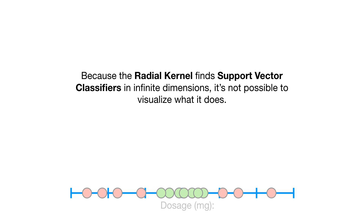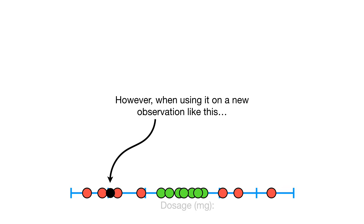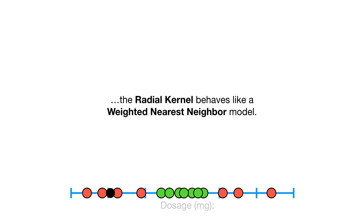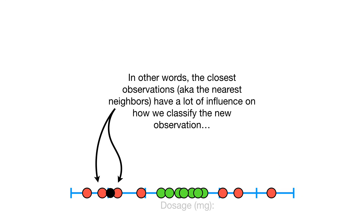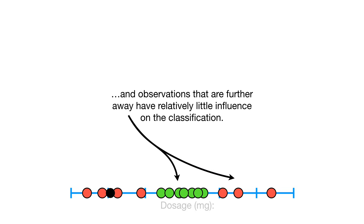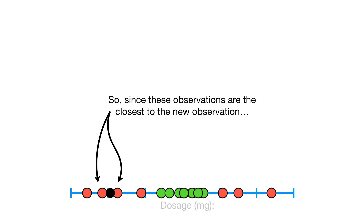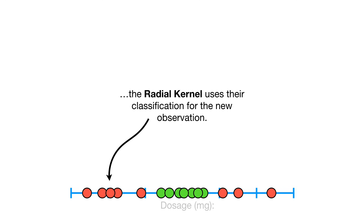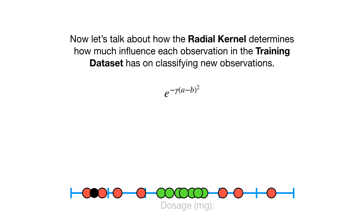Because the radial kernel finds Support Vector classifiers in infinite dimensions, it's not possible to visualize what it does. However, when using it on a new observation, the radial kernel behaves like a weighted nearest neighbor model. In other words, the closest observations, aka the nearest neighbors, have a lot of influence on how we classify the new observation, and observations that are further away have relatively little influence. So since these observations are the closest to the new observation, the radial kernel uses their classification for the new observation.